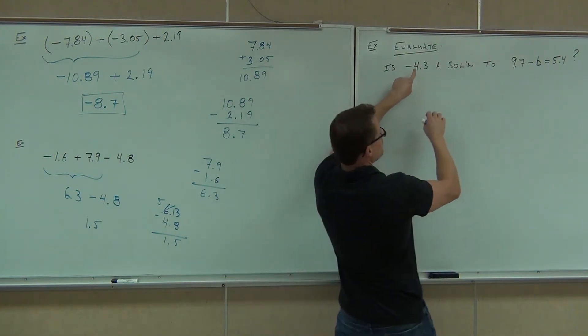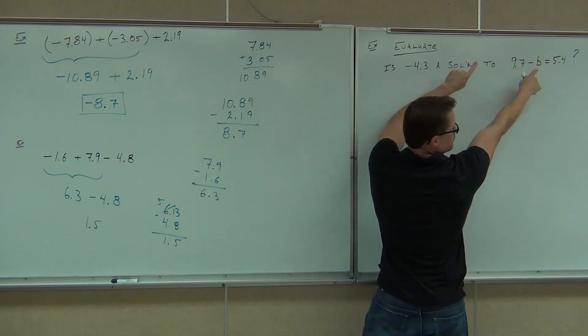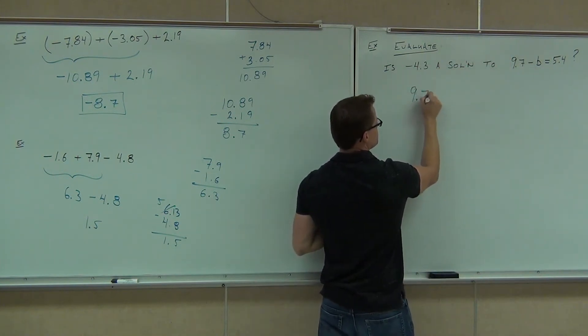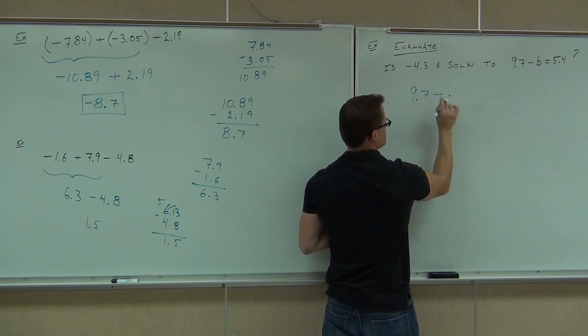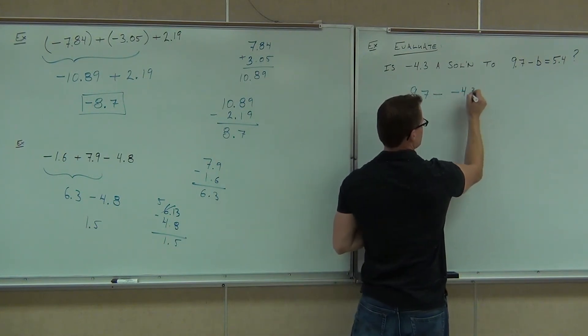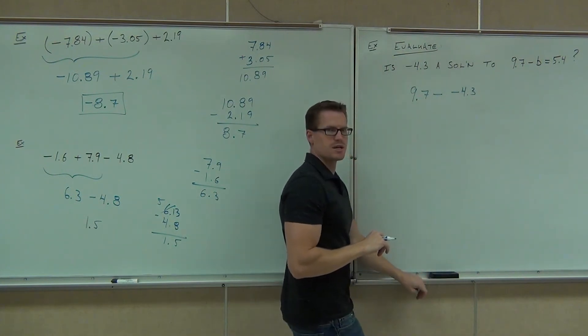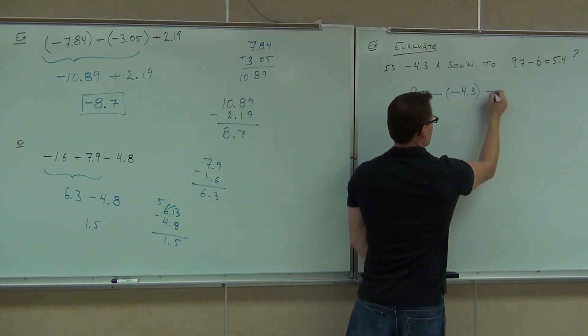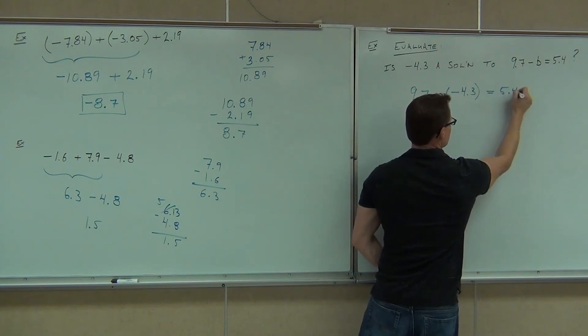So we'd say, okay, I'm going to plug this number into the only variable that's up there. So 9.7 stays the same. The minus stays the same. But that b has to become negative 4.3. What am I going to do to show that that's a negative number, folks? And we're checking to see if that's equal to 5.4.